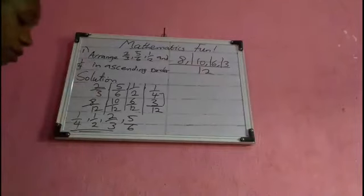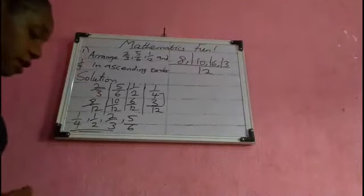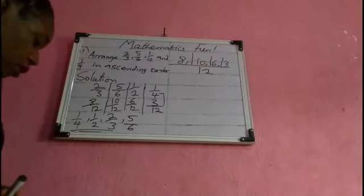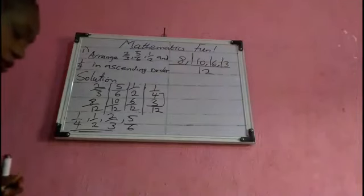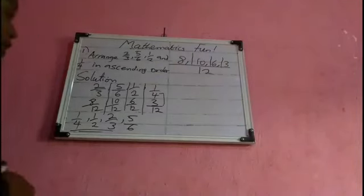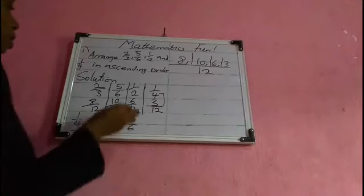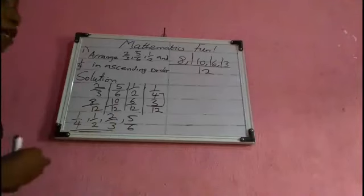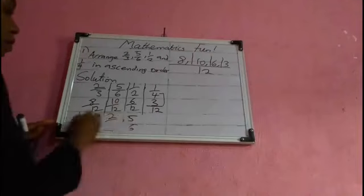So our final answer in ascending order is: one over four, one over two, two over three, and five over six. By now you should have no problem getting your lowest common multiple and arranging answers either in ascending or descending order.